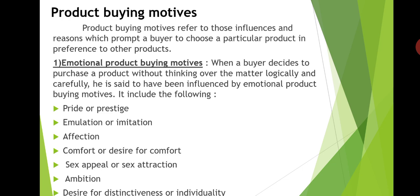Sex appeal or sex attraction: buyers buy and use certain things as they want to attract members of the opposite sex. For example, men and women buy cosmetics, shirts, different colors of shoes, and costly dresses because of this emotional motive or sex appeal. Sex appeal or sex attraction means buyers purchase products or services because they want to be attractive to members of the opposite sex.